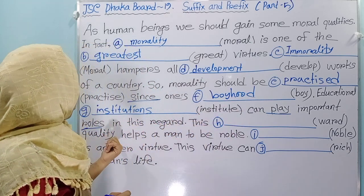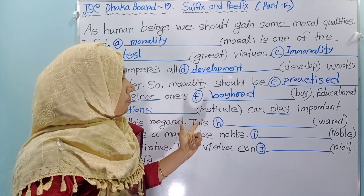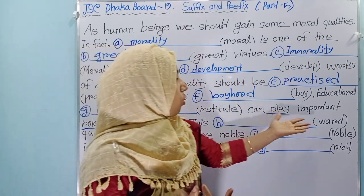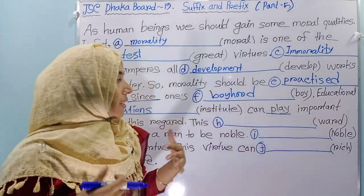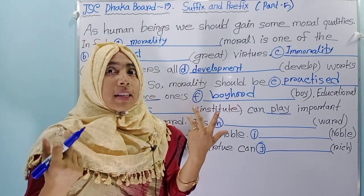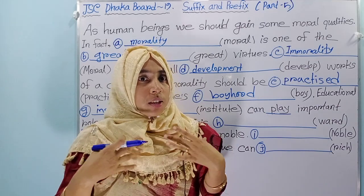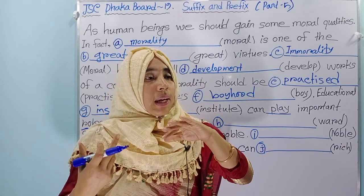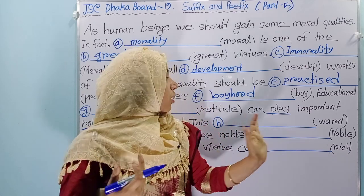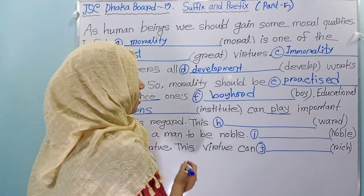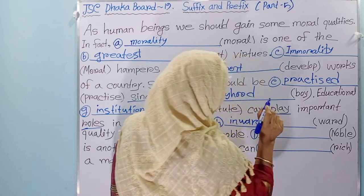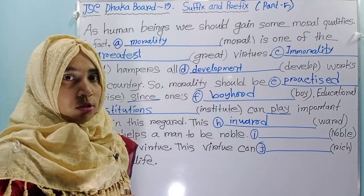This blank quality helps the mind to be noble. How quality? What quality is it — external or internal quality? You see, morality. That means this is internal quality, this is not external. We cannot see morality, we just feel morality. So you have to use inward quality. Inward quality helps the mind to be noble.